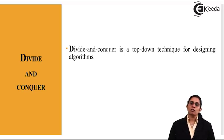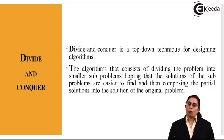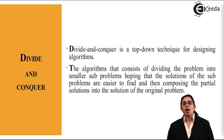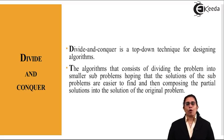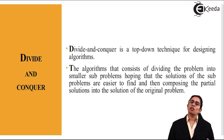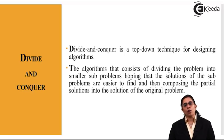The algorithm consists of dividing the problem into smaller sub-problems, hoping that the solution of the sub-problems are easier to find, and then composing the partial solutions into the solution of the original problem. Any real world problem can be broken into small sub-problems, then we find the solution for those sub-problems, and in the end we join all the solutions together to get the final solution — that is known as conquering.